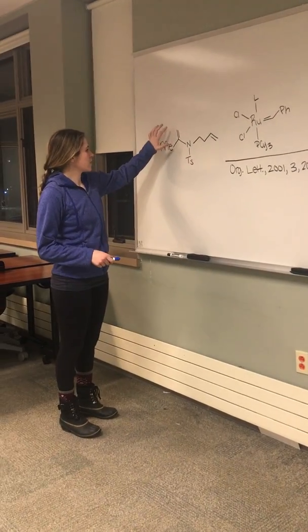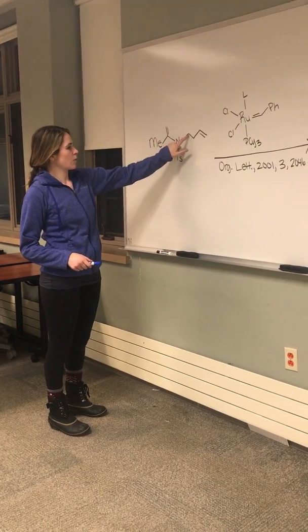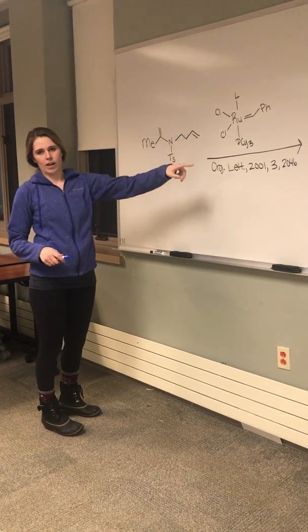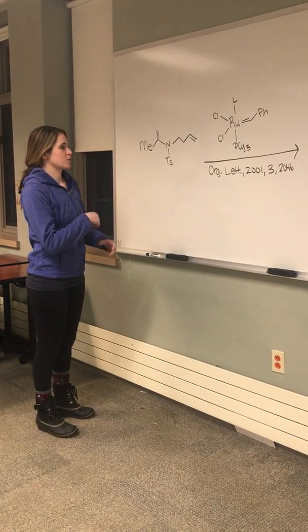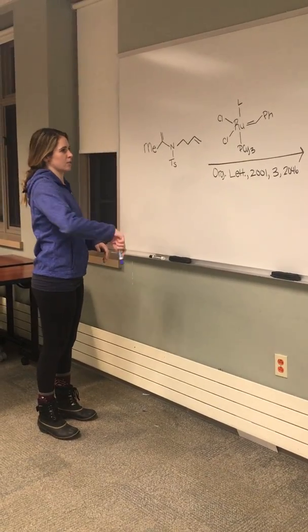And we have in our chain one, two, three, four, five, six, seven total atoms. And what we learned over there was that we're going to lose two atoms in our ring-closing metathesis.